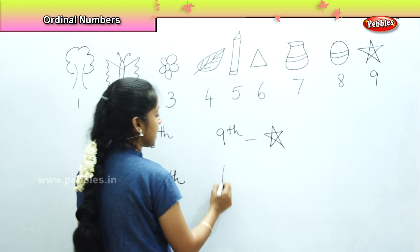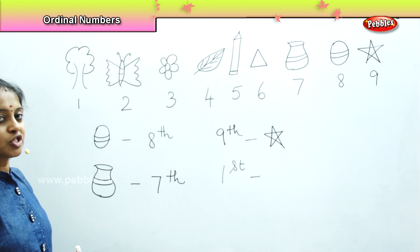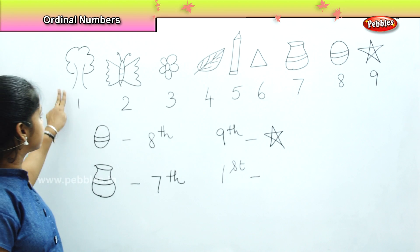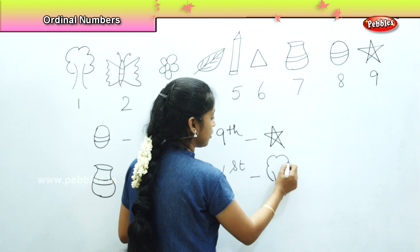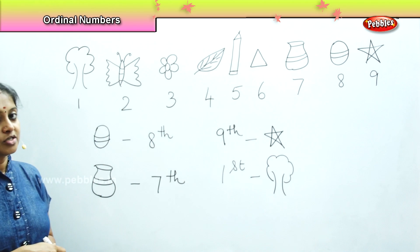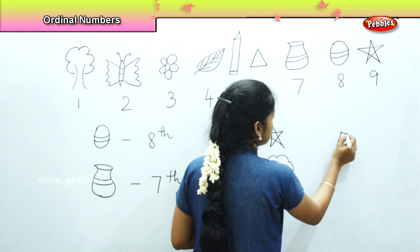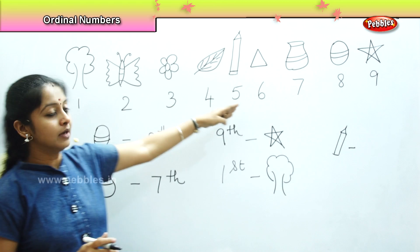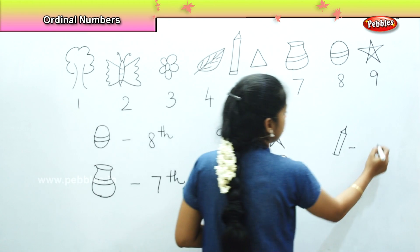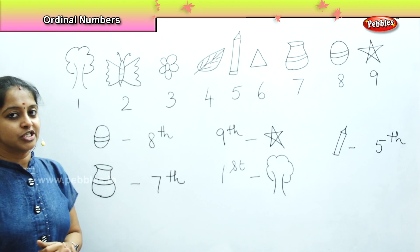Tell me what is kept in the 1st position. Which object is kept in the 1st position? Very good — it is the tree which is placed first. So on the 1st position we can find a tree. Where can we find a pencil? What is the position of the pencil? It is kept on the 5th position.